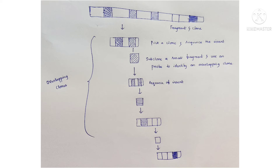This procedure is continued until the required gene is identified. At the same time, a restriction map of each selected clone is prepared and compared to know the region of overlapping, which makes identification of genes easier.